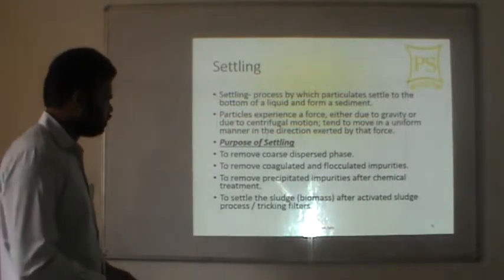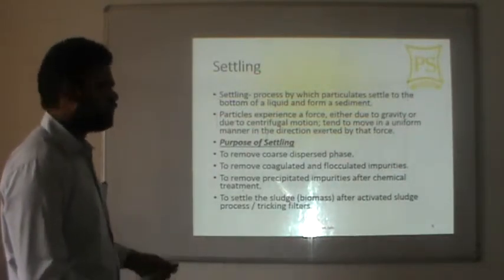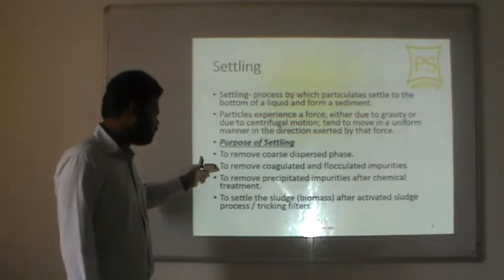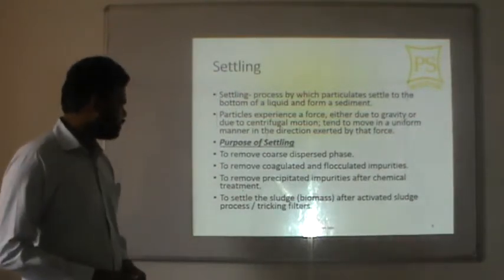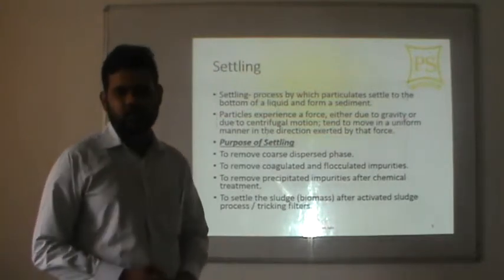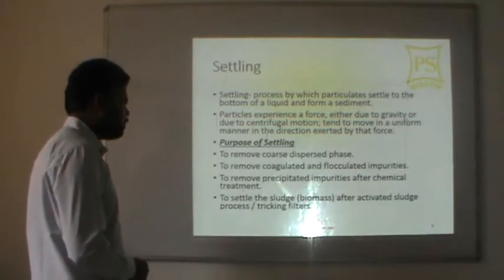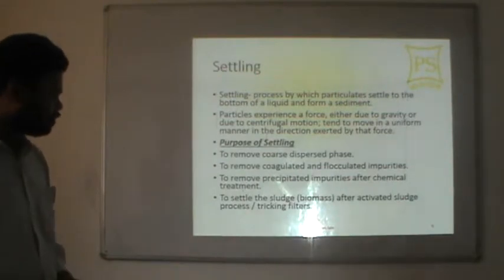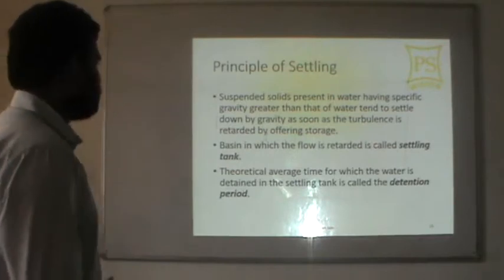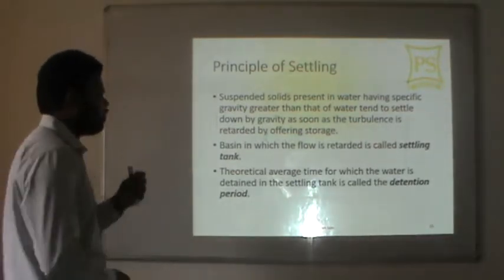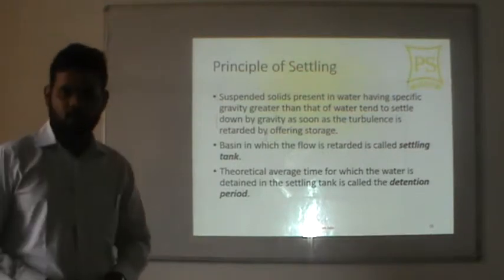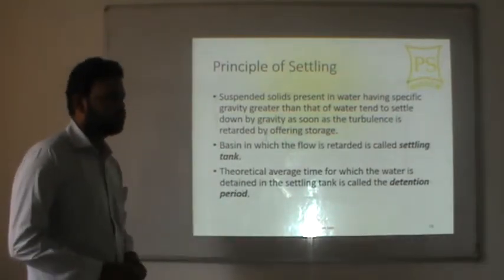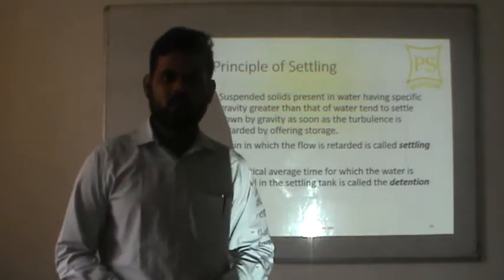The purposes of settling are: to remove coarse dispersed phase (Type 1 settling), to remove coagulated and flocculated impurities (Type 2 settling), to remove precipitated impurities after chemical treatment, and to settle biomass after activated sludge process. The principle is that suspended solids with specific gravity greater than water (greater than 1) settle down by gravity once turbulence is reduced.